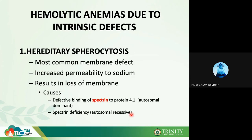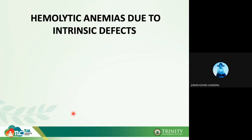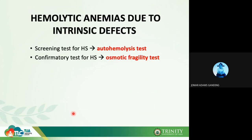In hereditary spherocytosis there is a defective binding of spectrin to protein 4.1. The condition can result from mutations in ANK1, SPTA1, SPTB, or EPB42, which encode ankyrin, alpha-spectrin, beta-spectrin, and protein 4.1 respectively. This leads to increased RBC fragility. The screening test is the autohemolysis test, and the confirmatory test is the osmotic fragility test.